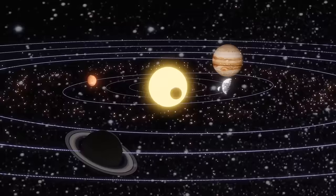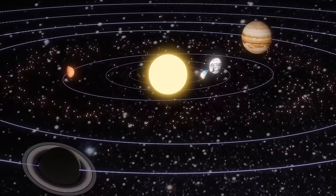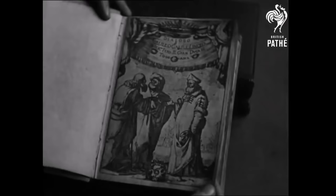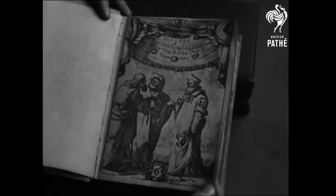In those early days, the prevailing view was geocentric - the belief that the Earth stood at the center of the universe with celestial bodies orbiting around it. This geocentric model was widely accepted and influenced the works of philosophers and astronomers for centuries.